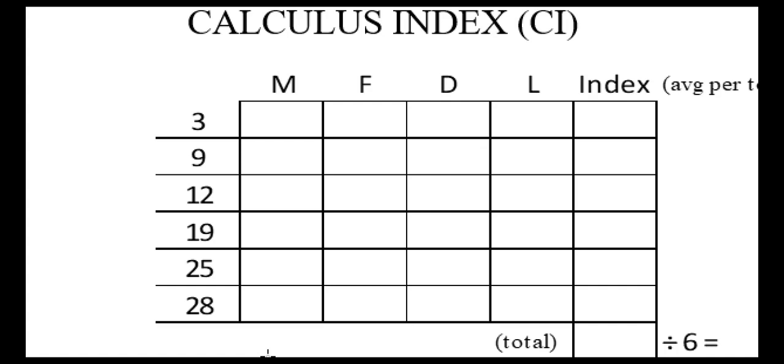So for instance, on the mesial of number three, let's say there's an abundance of supra and subgingival calculus. Then we're going to assign a three. On the facial there was mild, distal there was moderate, lingual there was none. So we're going to assign a number to each surface of the tooth listed based on the criteria.